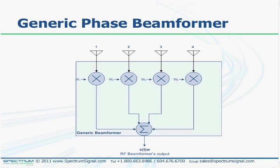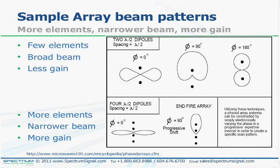Looking at some sample beam patterns for arrays: with more elements the beam patterns show a narrower beamwidth, and narrow beamwidth means more gain and more rejection of noise and interference from other directions. This system requirement for narrow beamwidth often drives the number of elements, which also drives the size and cost of the array and beamformer.